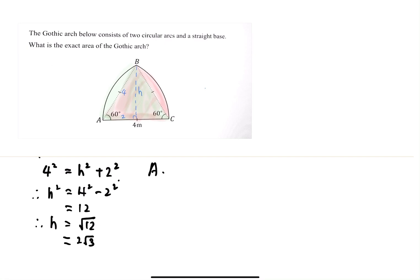Using the h, I can find the area of triangle. Area of triangle equals half base, base is 4, times the height which is 2√3, which gives me, canceling the 2, 4√3.